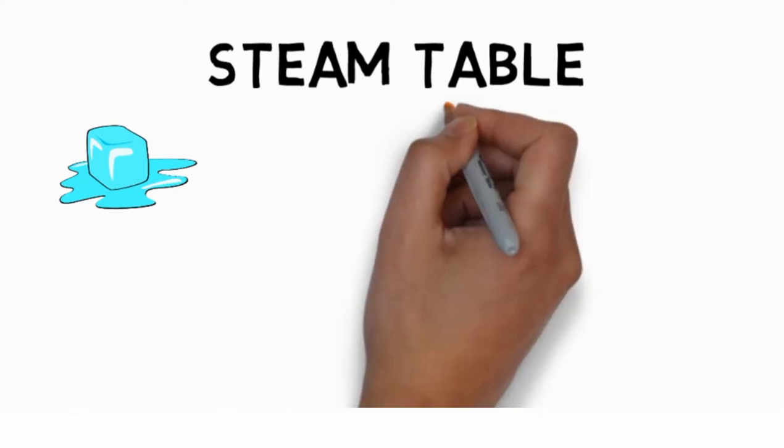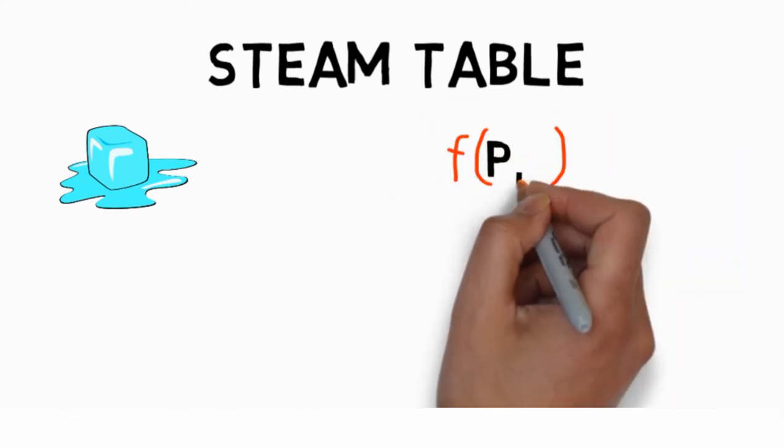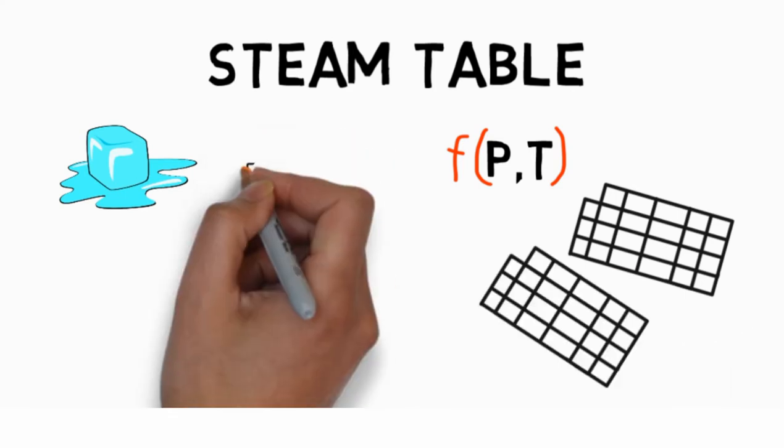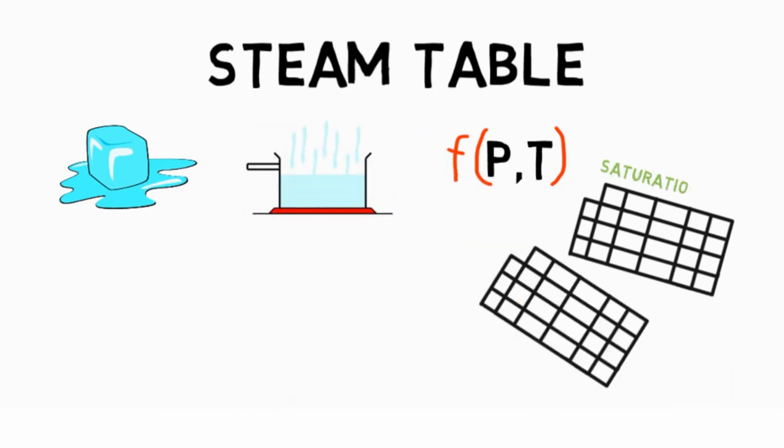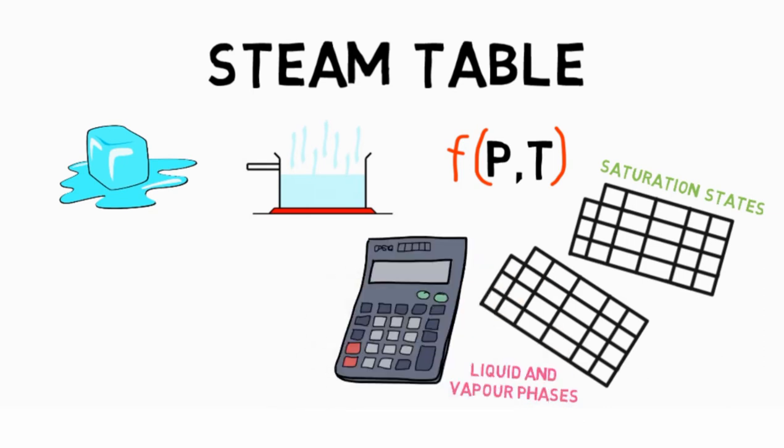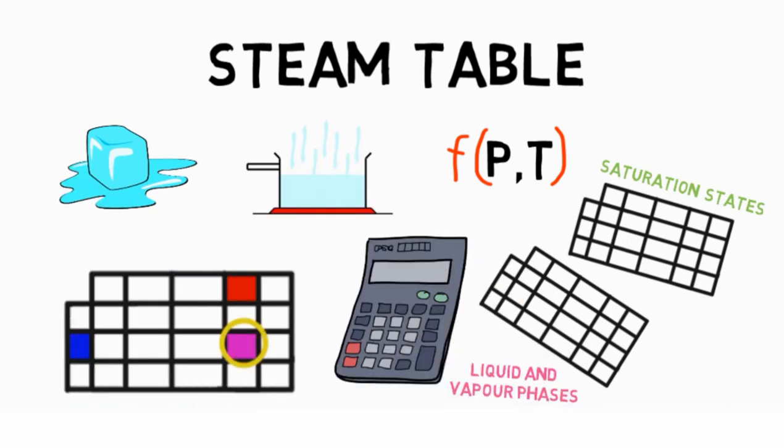Now the properties of water are arranged in a steam table as functions of pressure and temperature. Separate tables are provided to give the properties of water in the saturation states, the liquid states, and vapor phases. All this data can be used in solving problems to find out where and how a particular condition of steam will behave at a particular state.